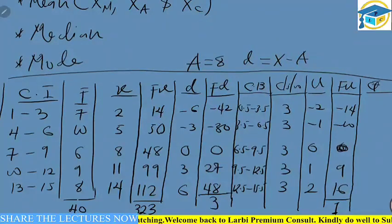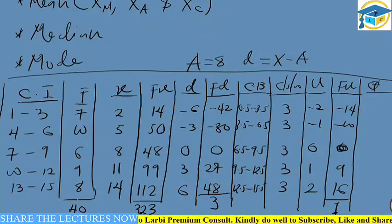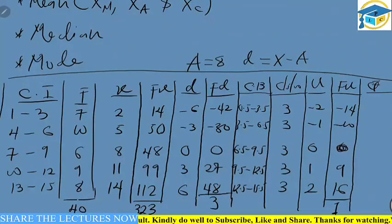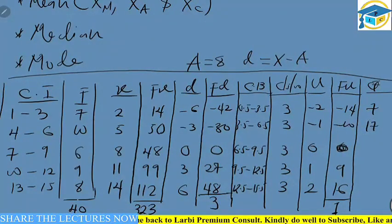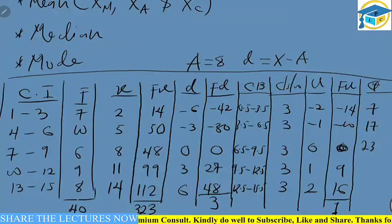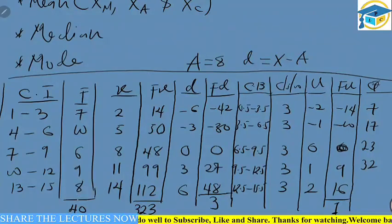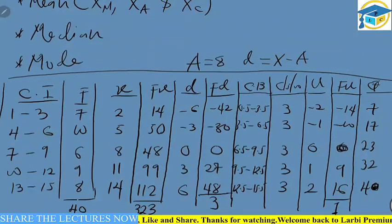To find cumulative frequency, we use a less-than approach, adding frequencies progressively. The last value should equal the total frequency, which is 40. So: first class = 7; then 7 + 10 = 17; then 17 + 6 = 23; then 23 + 9 = 32; then 32 + 8 = 40. This is the less-than cumulative frequency approach.